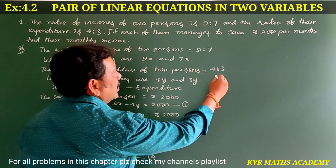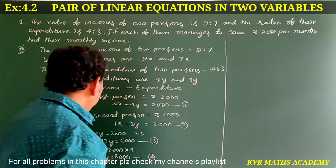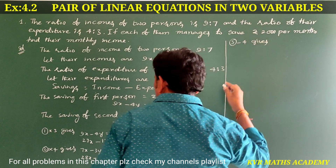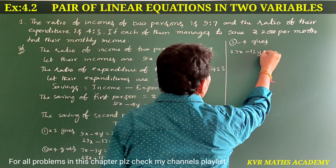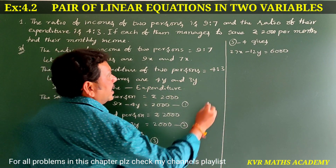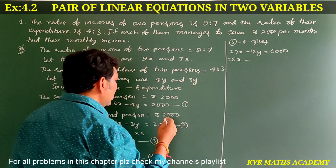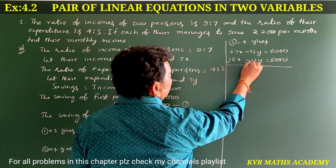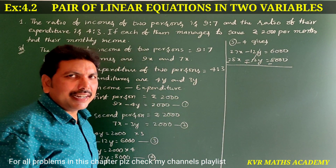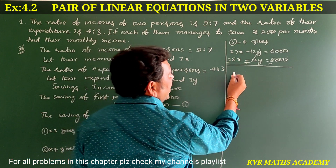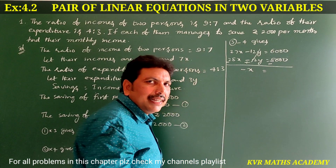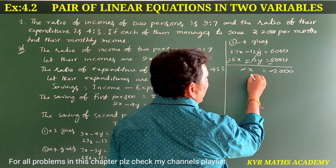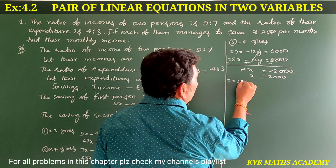Subtract equation 4 from equation 3. The minus 12y terms cancel. 27x minus 28x gives minus x, and 6000 minus 8000 gives minus 2000. So minus x equals minus 2000, which means x is equal to 2000.